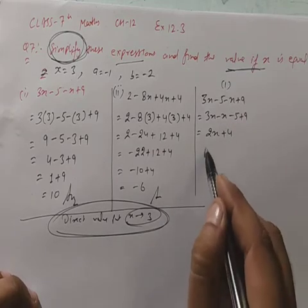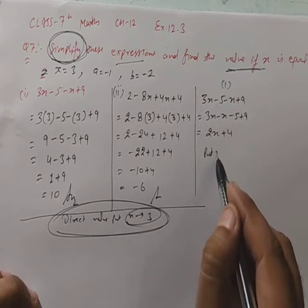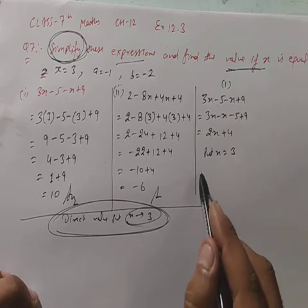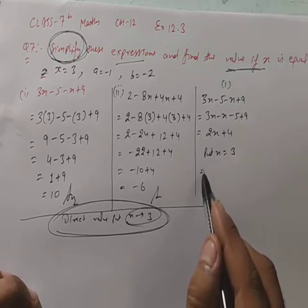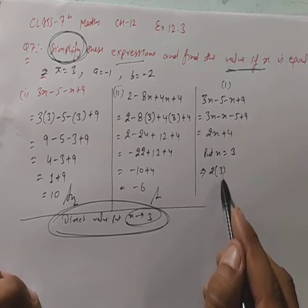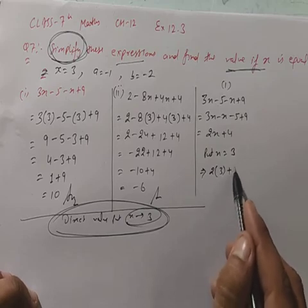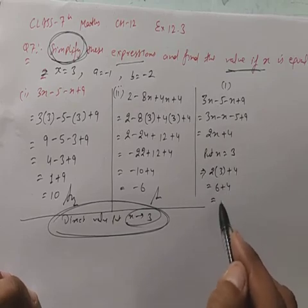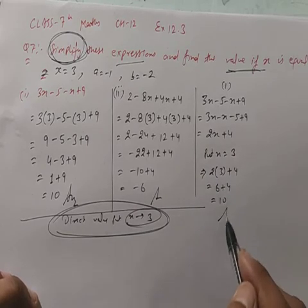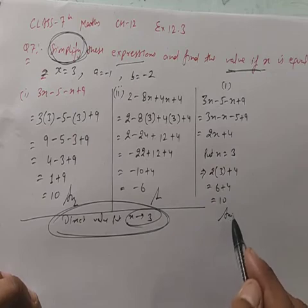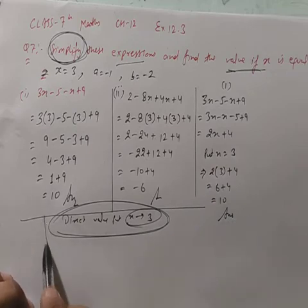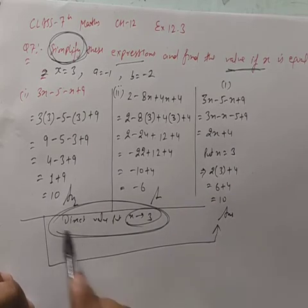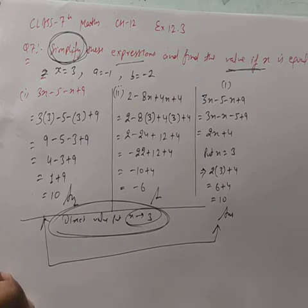अब 2x plus 4 में x = 3 put करेंगे: 2×3 plus 4 = 6 plus 4 = 10. देखो, same answer — 10 — जो direct method में भी आया था। Method अलग-अलग है लेकिन answer same है।